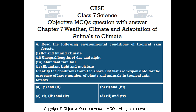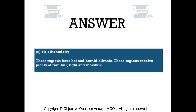Question number 4. Read the following environmental conditions of tropical rainforests: 1. Hot and humid climate. 2. Unequal lengths of day and night. 3. Abundant rainfall. 4. Abundant light and moisture. Identify the conditions responsible for the presence of a large number of plants and animals in tropical rainforests. Option A — 1 and 2. Option B — 1 and 3. Option C — 1, 3, and 4. Option D — 2 and 4. The right answer is Option C: 1, 3, and 4.